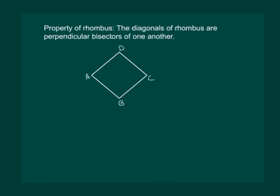One important property of rhombus is that the diagonals of rhombus are perpendicular bisectors of each other. That means if we have a rhombus ABCD and draw its diagonals AC and BD if they bisect at O, then angle AOD is 90 degrees.